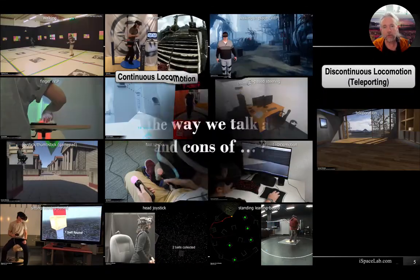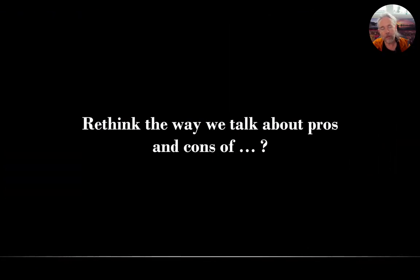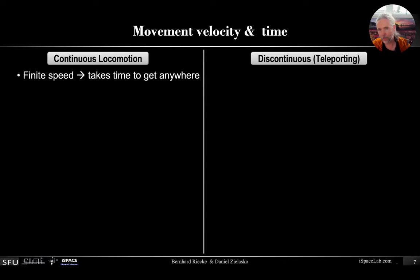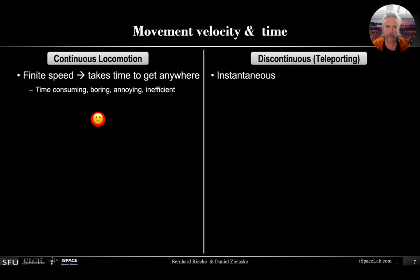What I'd like to do is rethink the way we talk about pros and cons of interfaces, using the example of teleportation versus continuous locomotion. With continuous locomotion there's a finite speed, so it takes time to get anywhere, which is time-consuming and typically assumed to be a disadvantage. With teleporting it's great because it's instantaneous — really the dream of any frequent traveler.